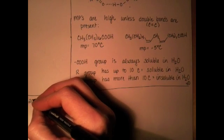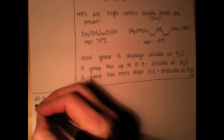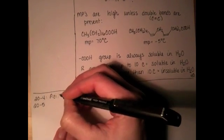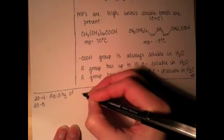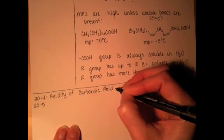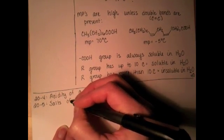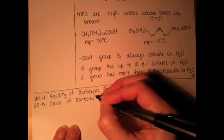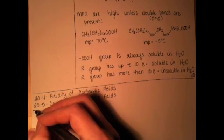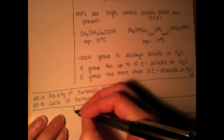Next, we're going to combine sections 24 and 25. Section 24 is on the acidity of carboxylic acids, and 25 is on the salts of carboxylic acids. We're going to kind of squeeze section 25 in the middle of 24, so not really going to come in order here, but all the essential stuff is going to get covered.